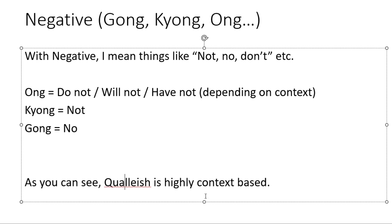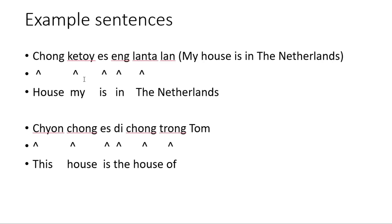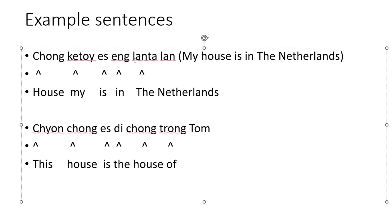As you can see, Kwalish is highly context-based. Now for example sentences: CHONG KETOI ZENG LANTALANG, which means MY HOUSE IS IN THE NETHERLANDS — literally HOUSE MY IS IN THE NETHERLANDS. LANTALANG is Netherlands; it has two parts like in English, where LANTA means country and LANG is the name of the Netherlands.